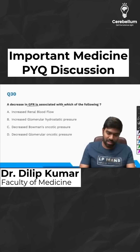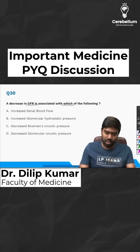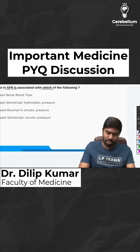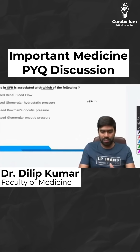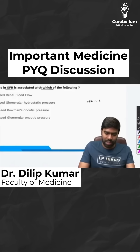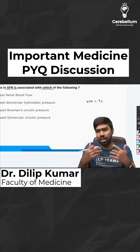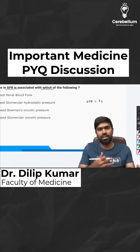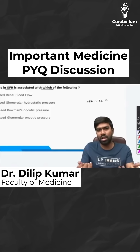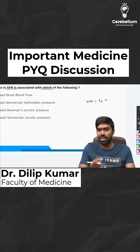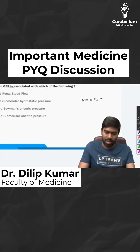They are asking about decrease in GFR being associated with which of the following. We have a concept called net filtration rate, which is based on two to three things. One is the filtration coefficient Kf. Second is the renal blood flow — if renal blood flow increases, GFR will increase; if renal blood flow decreases, GFR will decrease. The filtration coefficient is based on capillary permeability as well as the capillary surface area in the glomerulus.